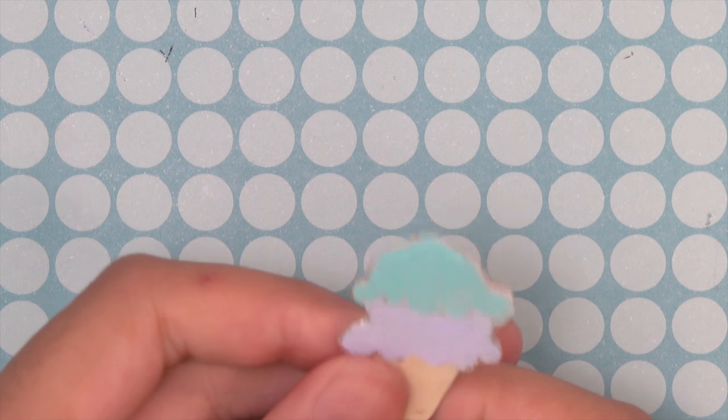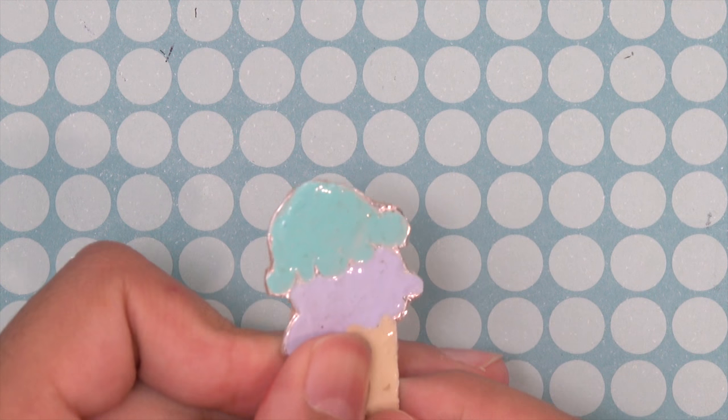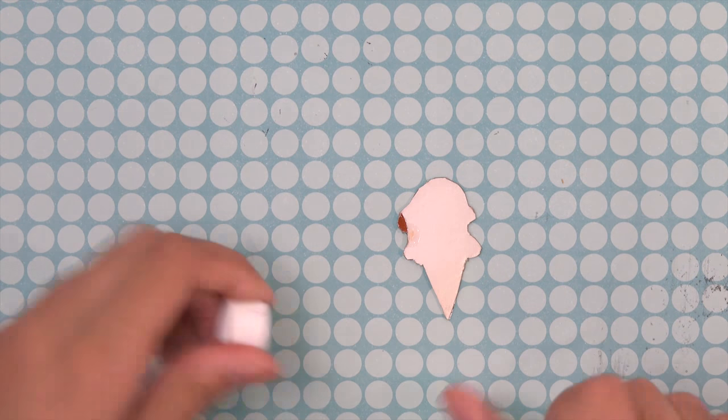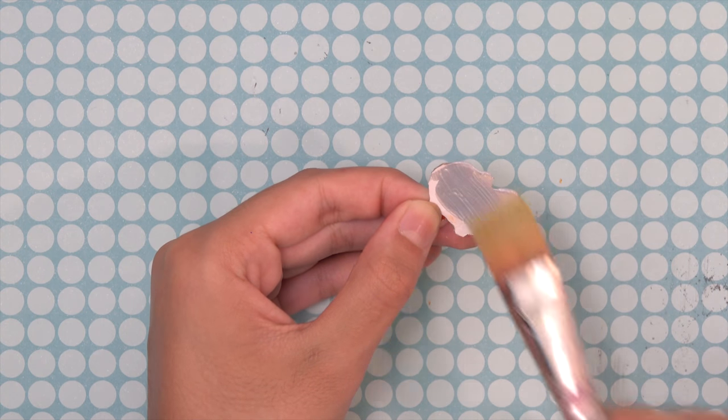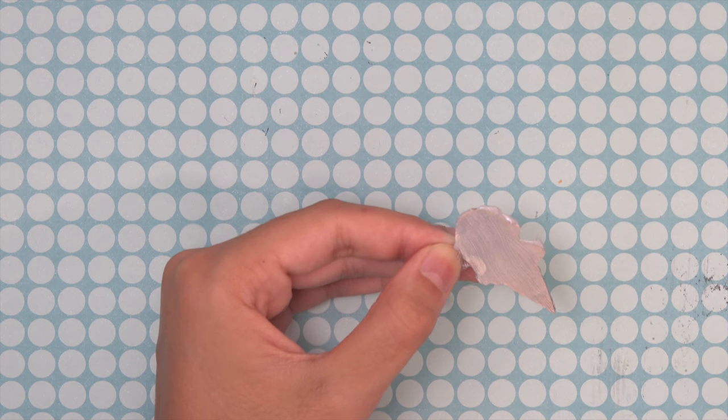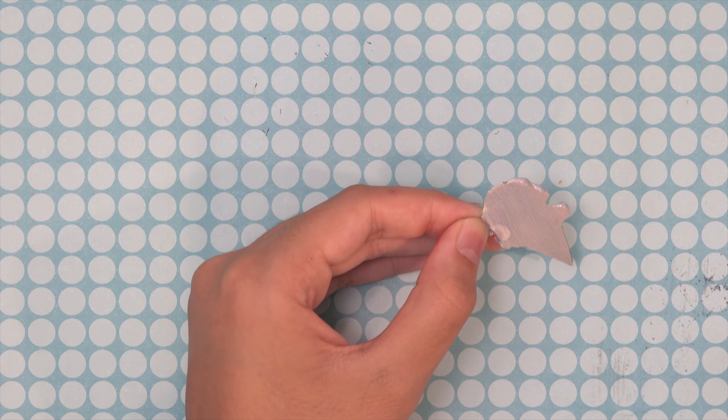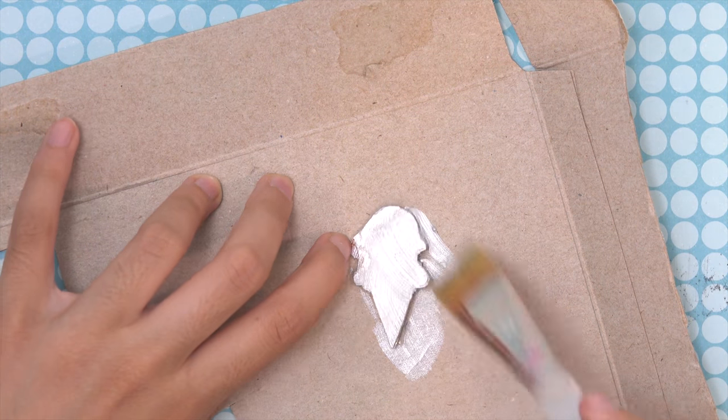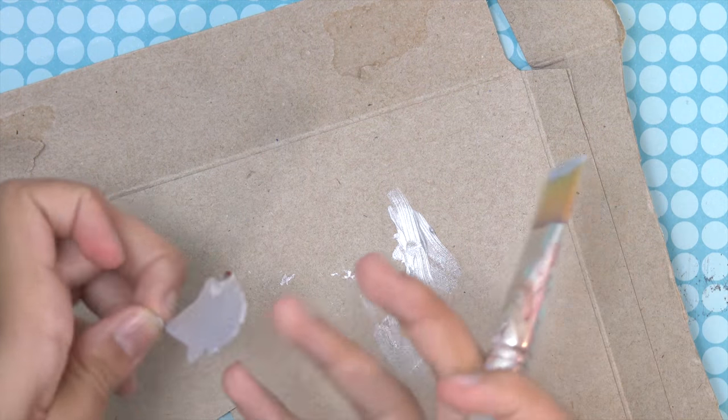Once everything is dry, you can totally skip this part, but I went ahead and I painted the back of my pins with some silver acrylic paint. This part is so optional you don't have to do it at all, but I just think it adds something a little bit extra to it. You won't be seeing this part anyway.